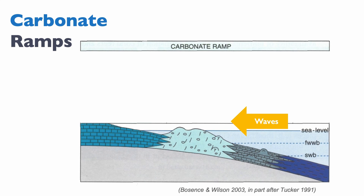Waves come and crash on the shoal. That shoal is typically sandy — it can be skeletal sand or oöidal sand. Typically you have shoals that form the barrier to energy, and the shoal is what allows us to distinguish between different parts of a carbonate ramp.